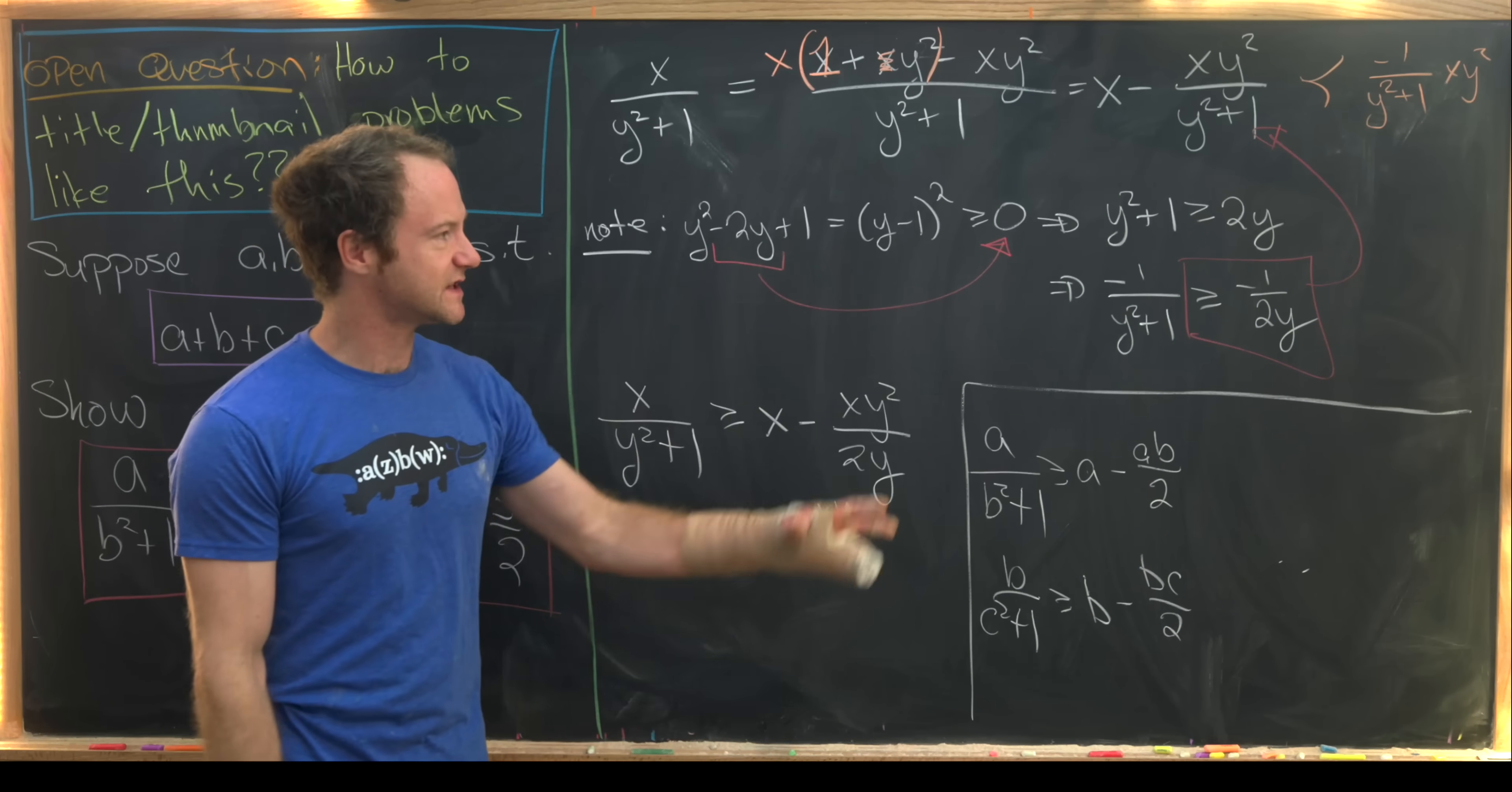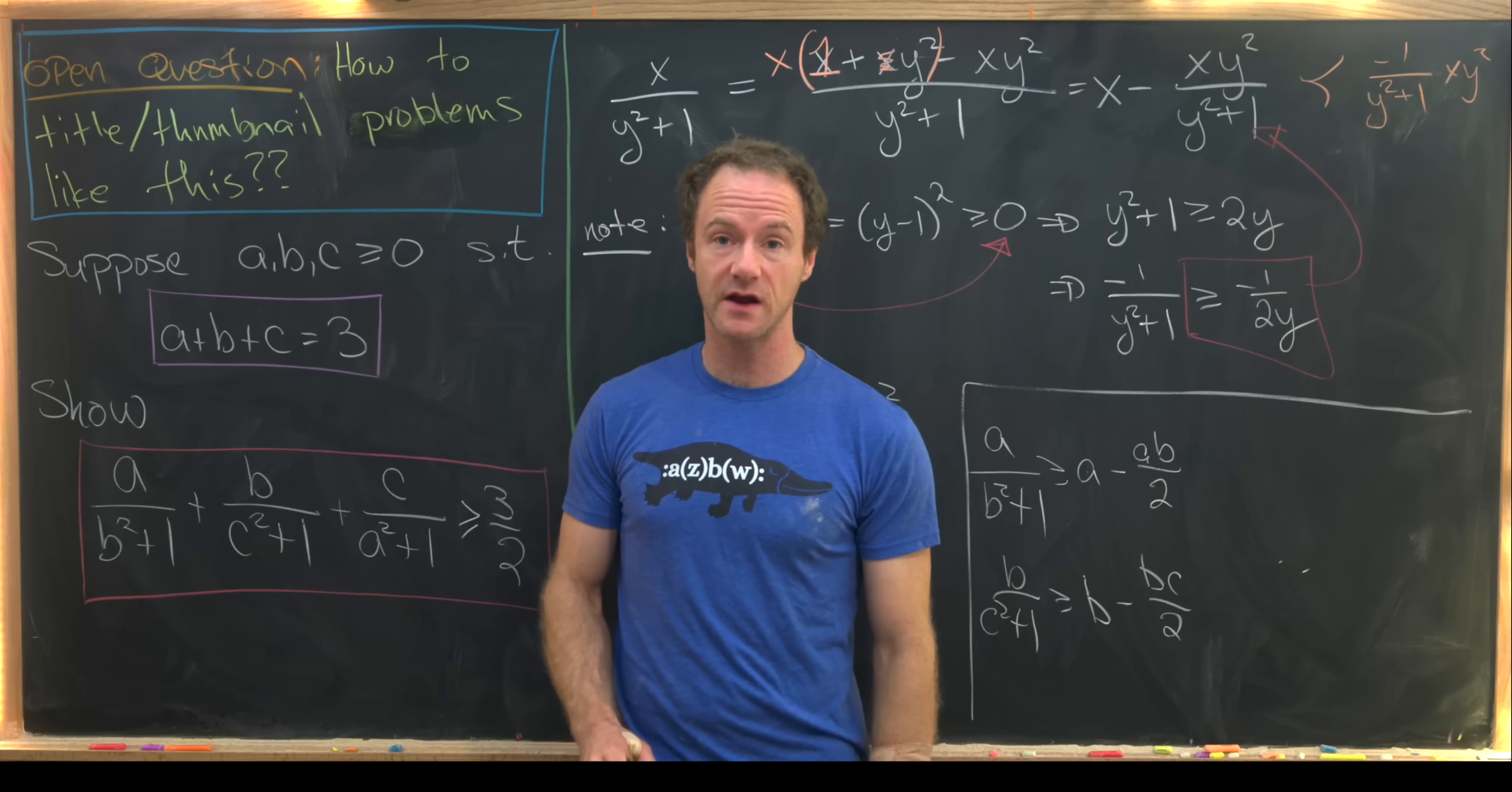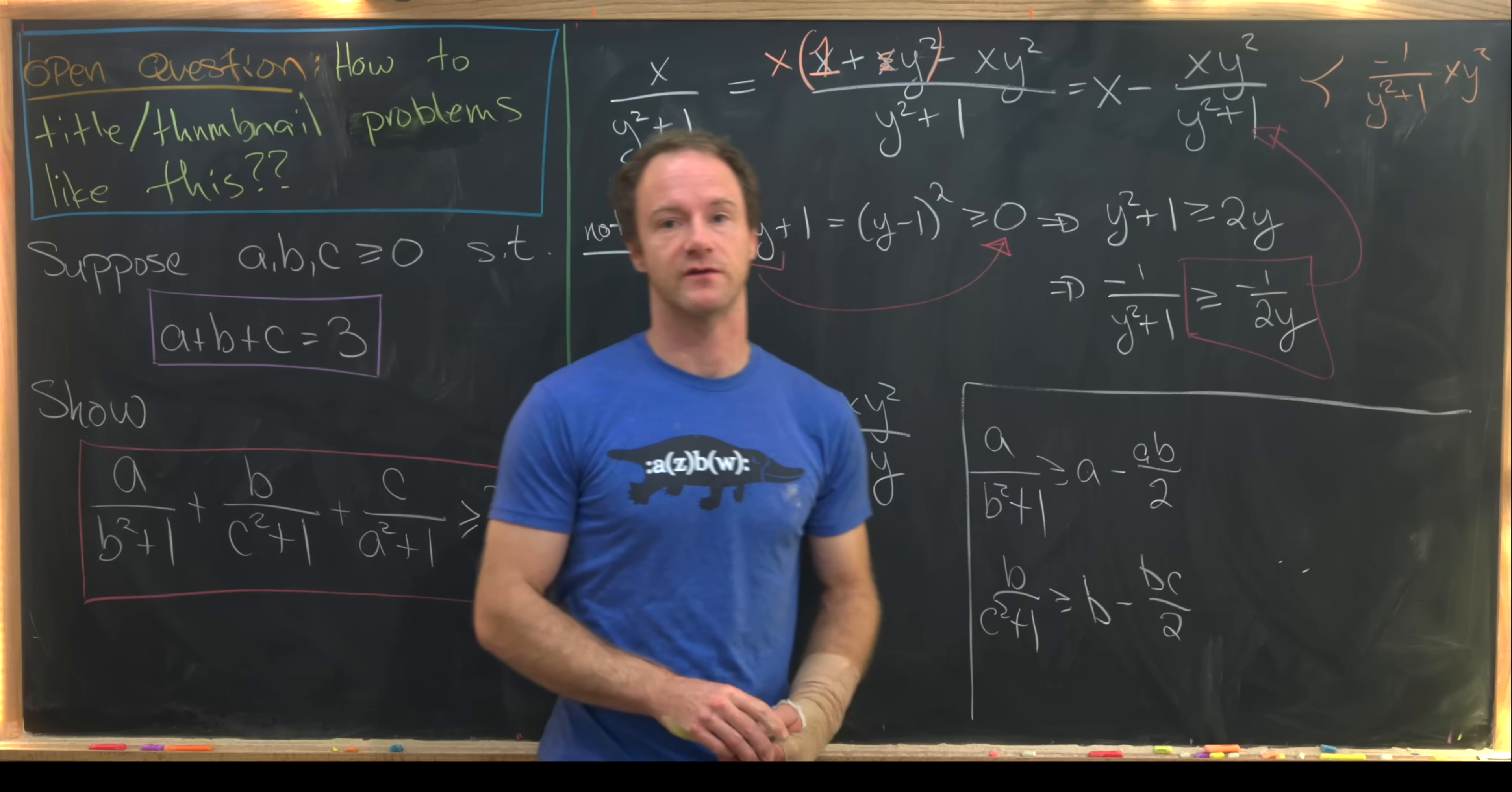Okay, so let's maybe get rid of this and then we'll apply what we've just discovered to the left-hand side of our inequality over here. And hopefully that'll move us towards showing that this is in fact bigger than or equal to 3 over 2.